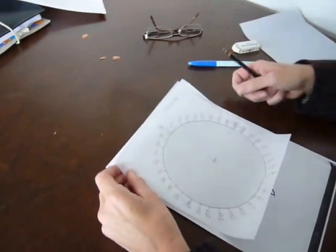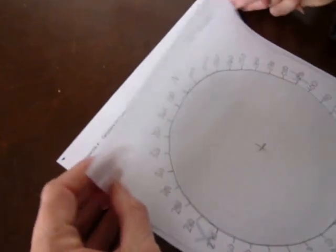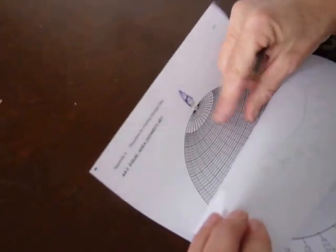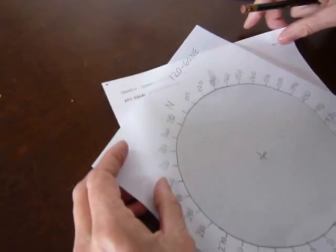So keep north heading up the table and you'll always know where you are in space. Use the stereo net and turn the AB line, which is your strike line, to the position of the strike 120 degrees.